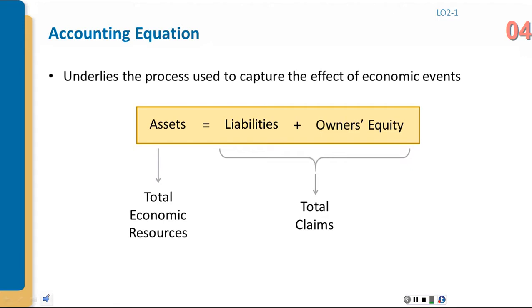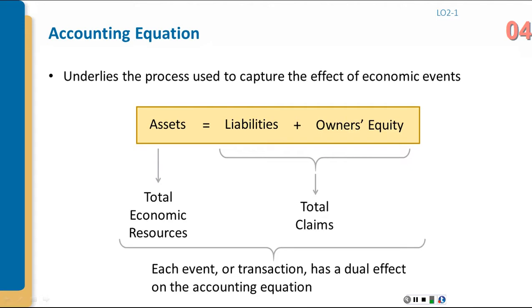Each event or transaction has a dual impact on the accounting equation — there are always at least two accounts impacted. There will be a total of debits and a total of credits, and they must be equal. They can be spread across numerous accounts in one transaction, such as a payroll expense entry that has many tax liabilities. But minimally, there must be at least two accounts, and the total of debits must equal the total of credits.